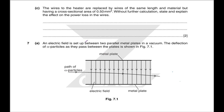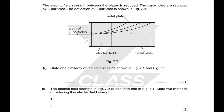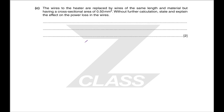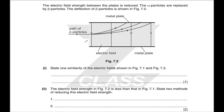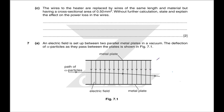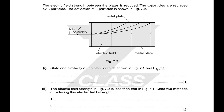We have particles in an electric field. The electric field strength between the plates is reduced and alpha particles are replaced by beta particles. A similarity between the electric fields shown in 7.1 and 7.2: they are both uniform — series of parallel, evenly spaced lines. The field strength in 7.2 is much less than 7.1 because the lines are more spaced out. Two methods of reducing electric field strength: reduce the charge density on the plates, or make the plates further apart.